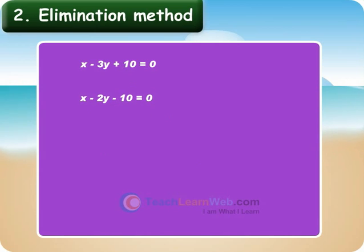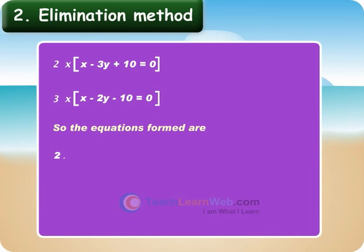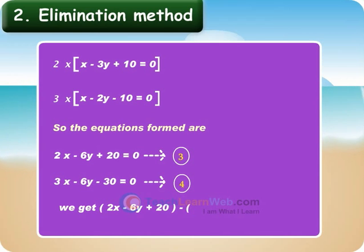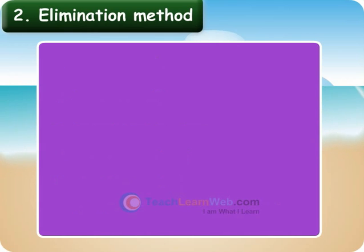Children, our first step should be to make the coefficients of y equal. To achieve this, multiply equation 1 by 2 and equation 2 by 3. So the equations formed are 2x minus 6y plus 20 equals 0 and 3x minus 6y minus 30 equals 0. Step 2: Subtract equation 4 from equation 3 to eliminate y, since the coefficients of y are the same. We get 2x minus 6y plus 20 minus (3x minus 6y minus 30) equals 0, giving minus x plus 50 equals 0.